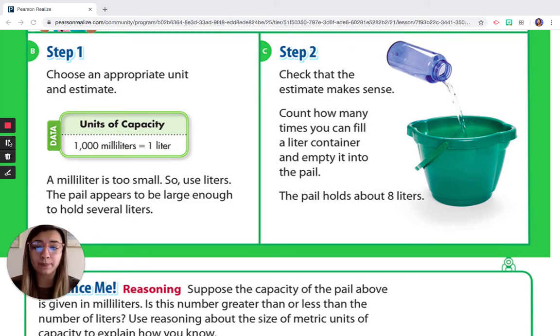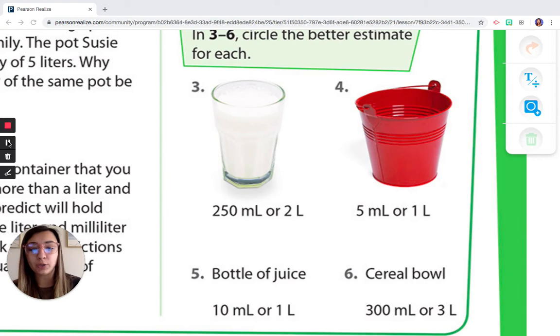So I would definitely pick the eight water bottles to help me fill up the pail. So for this one, we would pick if we had to pick milliliters or liters, we would definitely pick liters. All right, so we're going to do a couple examples.